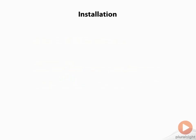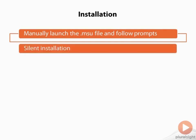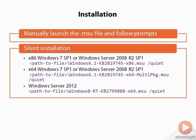When you go to Microsoft and download the Windows Management Framework file, what you're going to get is an MSU file. You can manually launch that file, follow the prompts, and you'll install the Management Framework and PowerShell version 4. There's no need to uninstall anything beforehand — just let the update do its thing. If you prefer a silent installation approach, that is certainly possible. You basically run the MSU file as a command line using the slash quiet parameter. Depending on whether you're running the x86, x64, or Windows Server 2012 version, the file name is different, but the syntax is pretty much the same: the name of the MSU, slash quiet, and it'll get the job done.